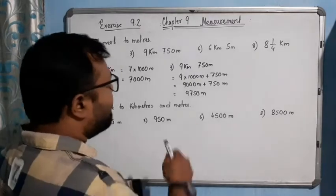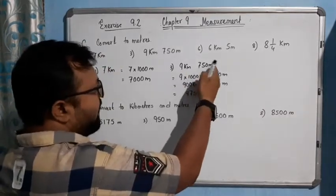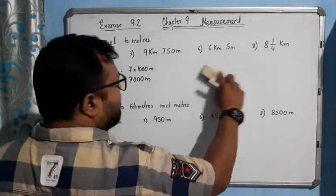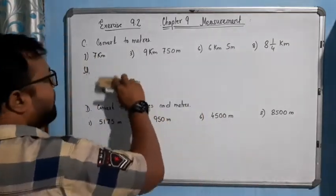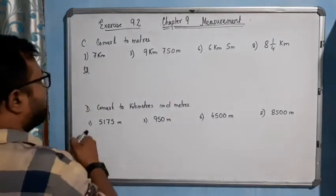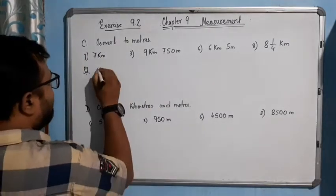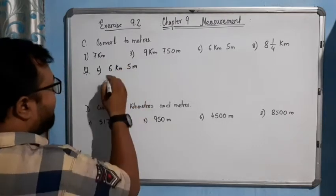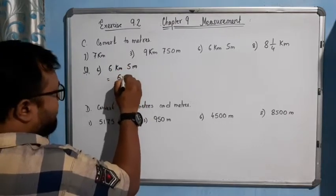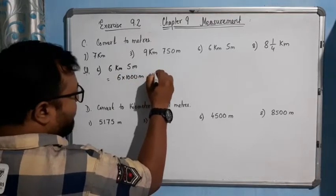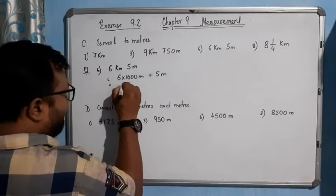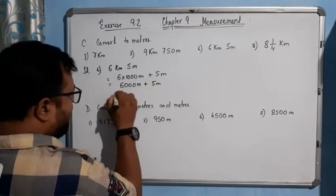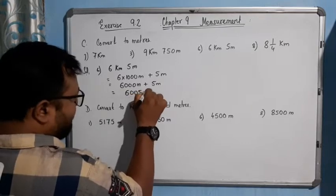We are converting kilometers into meters; meters remain as usual. Now for number three: 6 kilometers and 5 meters. 6 kilometers means 6 into 1000 meters plus 5 meters, which is 6000 meters plus 5 meters, giving 6005 meters.